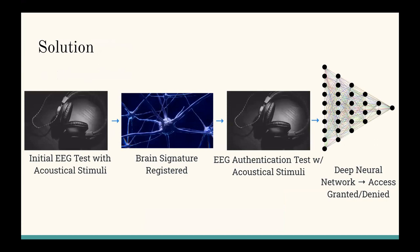More on how the EEG testing solution works: there's an initial EEG test with, for example, acoustical stimuli, and the user would listen to a series of clicks and tones. The test records these results in the form of auditory evoked potentials — a metric for measuring EEG. After this, the brain signature can be registered using the series of clicks and tones and your response to them. In the future, if you want to ever log onto that system again, you just listen to the same series of clicks and tones, and assuming your brain waves are similar enough to the authenticated ones, you can be granted or denied access through a deep neural network.